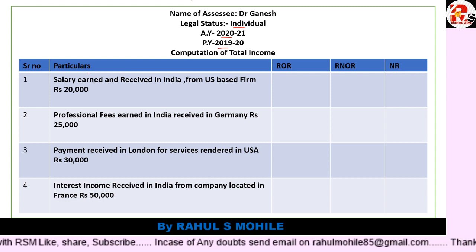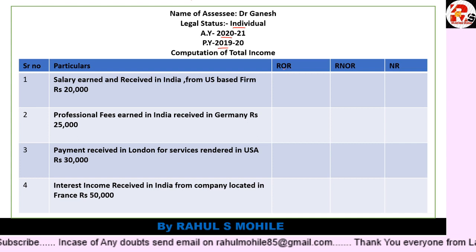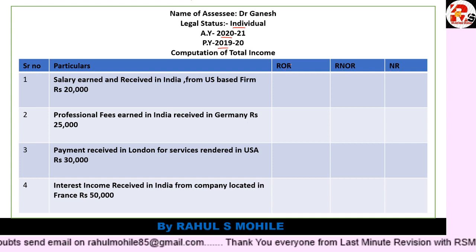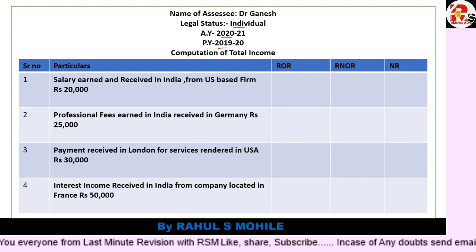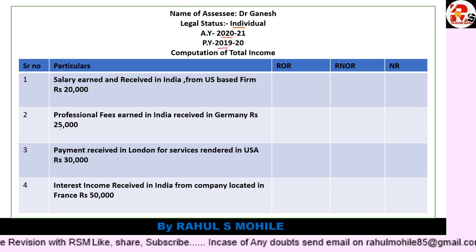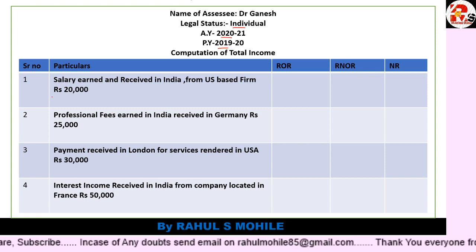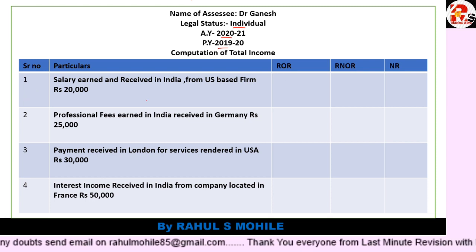Make columns: serial number, particulars, ROR, RNOR, and NR. ROR stands for Resident and Ordinary Resident, RNOR is Resident but Not Ordinary Resident, and NR is Non-Resident. I have written the full points here for reference, but when you write you don't need to write the full point — just write the amount in the relevant columns.